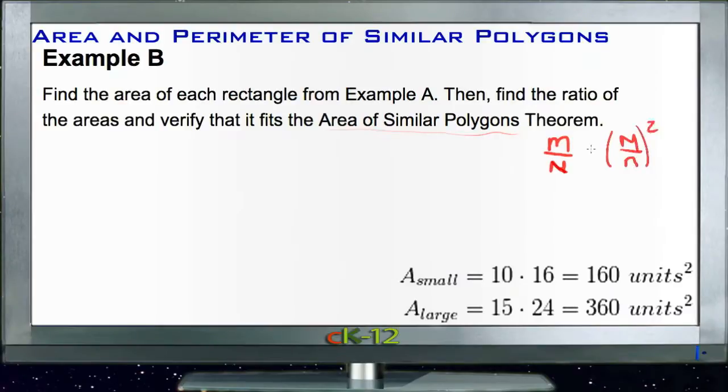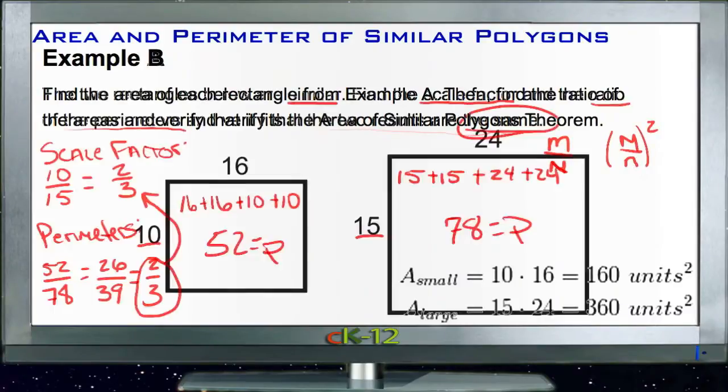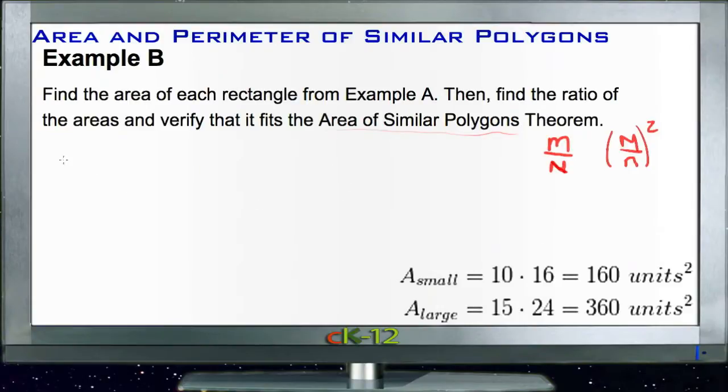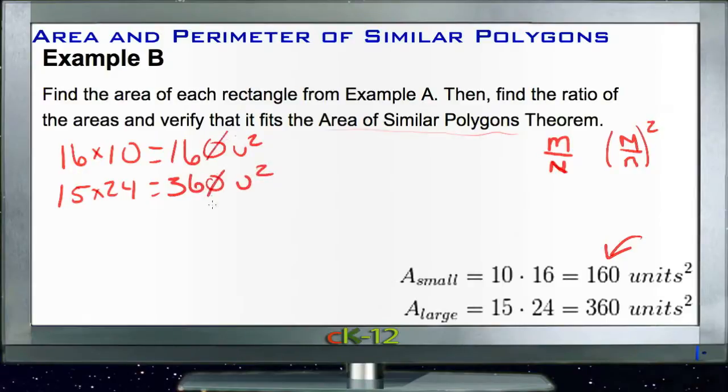So let's take a look and see if that works. The two figures were 16 by 10 and 24 by 15. Our first one, 16 by 10, gives us 160 square units. You can see that down here as well. And then our second one was 15 by 24, or 360 square units.